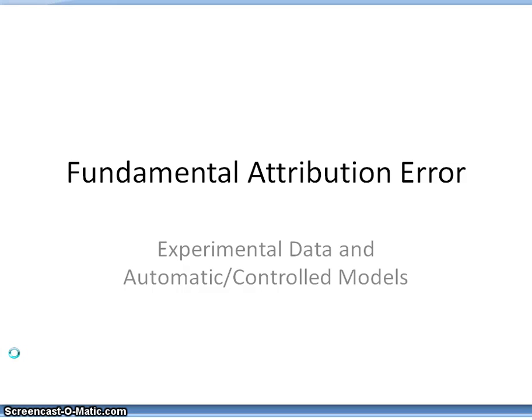We've already had an introduction to attribution theory. In this lesson, we're going to examine some of the research on what's called the fundamental attribution error. We'll look at some data, and then we'll try to model that error based on our distinction between automatic and controlled processes in the brain.